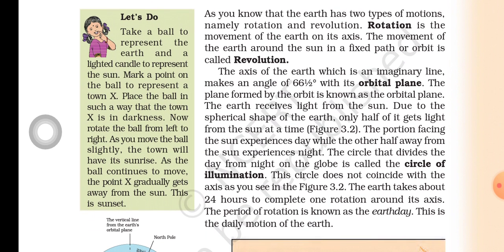Now rotate the ball from left to right. As you move the ball slightly, the town will have its sunrise. As the ball continues to move, the point X gradually gets away from the sun. This is sunset.